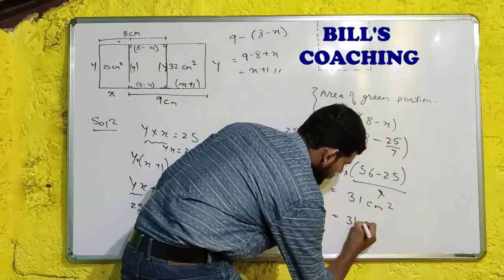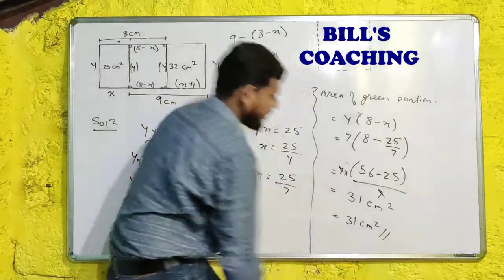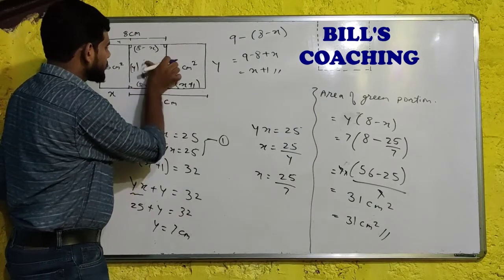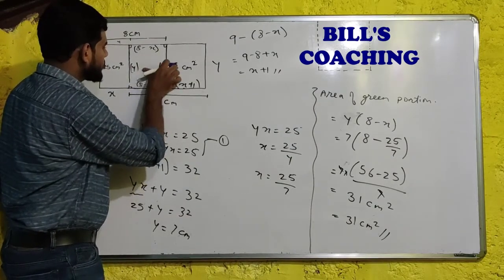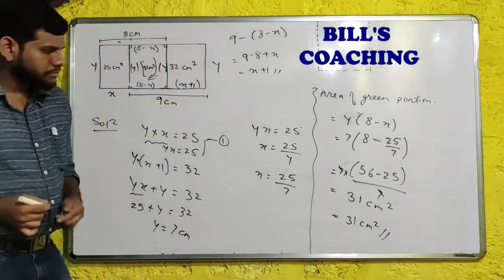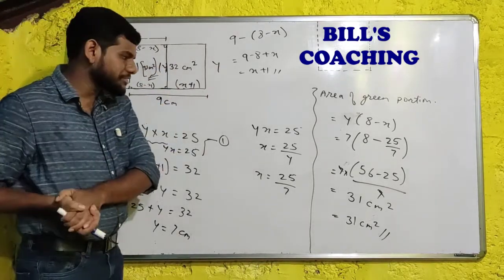And this is 7 multiplied by... cancel out this. And what will this? This will be 31 centimeters square. I will write it one more time. 31 centimeters square. And this is the answer. So I will write it over here, 31. So let me write it over here. This will be 31 centimeters square.